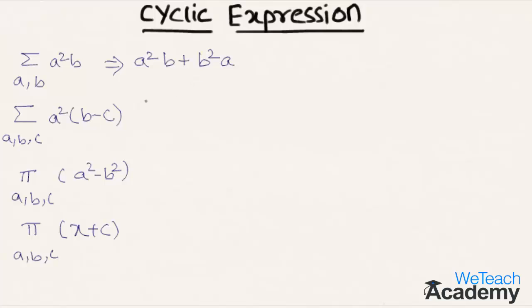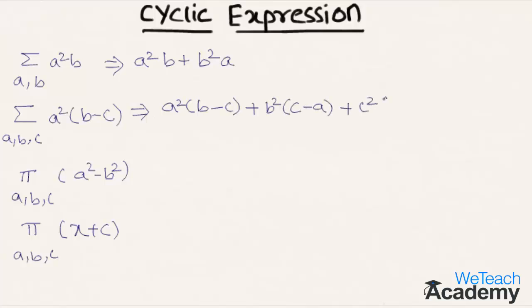The second example is sigma a, b, c of a square into b minus c, which gives a square into b minus c, plus b square into c minus a, plus c square into b minus a.